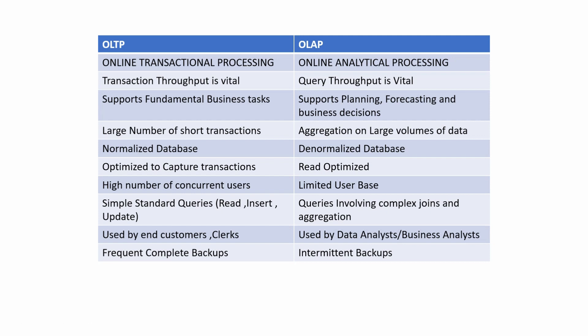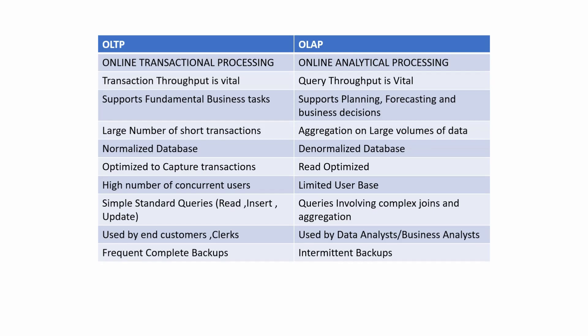OLTP databases are highly normalized — if you haven't watched the videos on normalization, a link will be provided and you should go through all the videos on the three normal forms. OLAP databases are actually denormalized to reduce join complexity and improve query performance — we will talk about denormalized databases in upcoming videos. OLTP systems are optimized to capture transactions, while OLAPs are read-optimized so that reports and dashboards can be generated quickly.